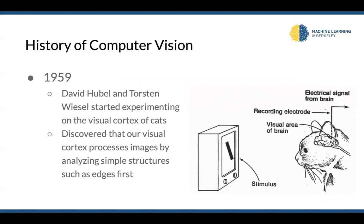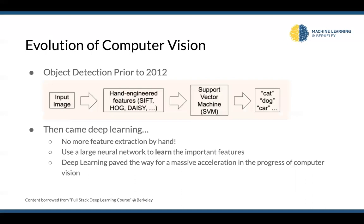Computer vision has its roots in cognitive science and psychology. In 1959, neurobiologists Hubel and Wiesel experimented on cats, probing the visual cortex and showing different kinds of patterns to see what activations they could observe. They noticed that simple edges and patterns led to the highest activations, figuring out that a cat breaks an image down by looking at different kinds of edges first.